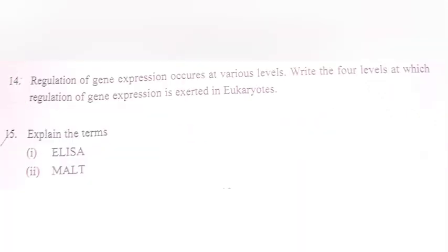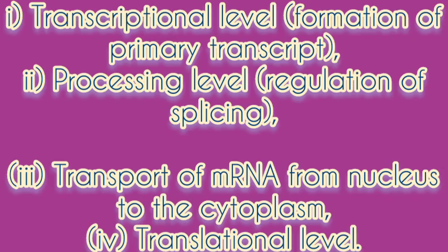Question 14. Regulation of gene expression occurs at various levels. Name four levels at which regulation of gene expression is exerted in eukaryotes. Answer: 1. Transcription level. 2. Processing level. 3. Transport of mRNA from nucleus to the cytoplasm. 4. Translational level.